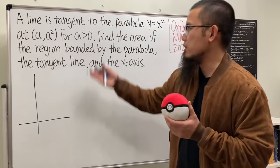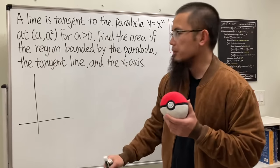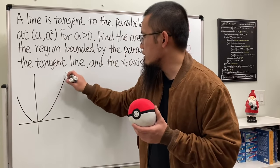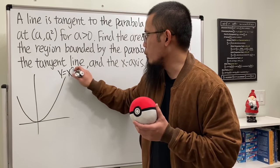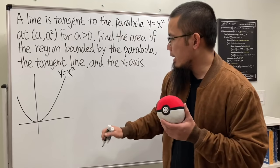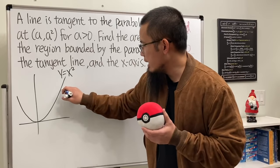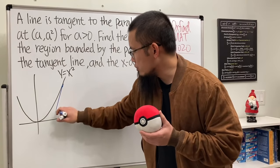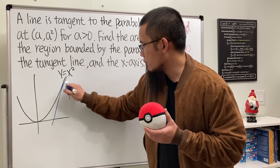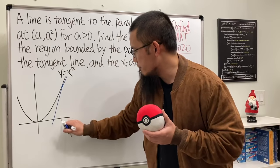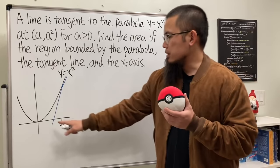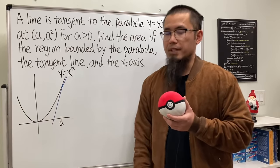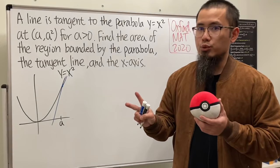Let's take a look at the picture. We just have to focus on the first quadrant because a is positive. Here is y equals x squared, the point a is marked, and this is the tangent line. This right here is the region that we want.